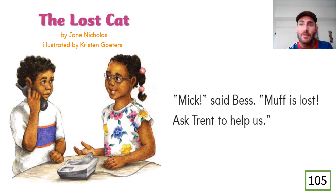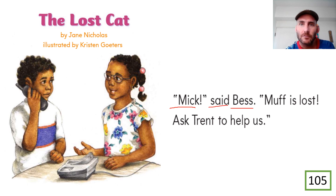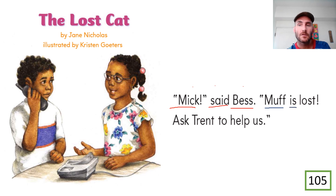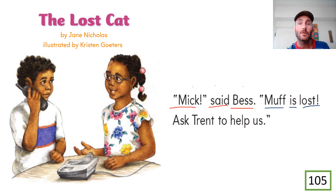Mr. Pan is going to read sentence number one, and then you read sentence number one. Sentences two and three, you will read first and then you can read again with Mr. Pan. Let's start with sentence number one. Mack said Bess. Boys and girls, read with me one more time — Mack said Bess. Now sentence number two, I want you guys to read. Very good reading, boys and girls. Read together with me one more time — Muff is lost.